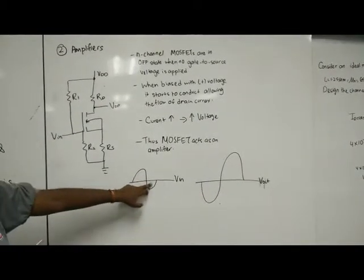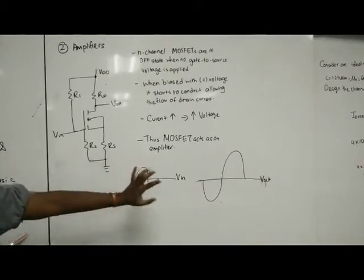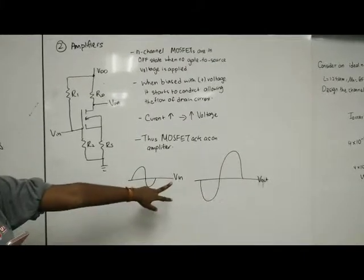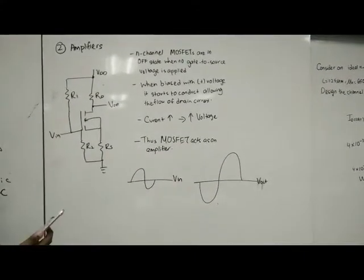MOSFET can act as an amplifier because when current increases, voltage increases. This is an example of the amplitude. You can see the amplitude of the graph - when voltage in, the amplitude is smaller, and when voltage out, the amplitude is bigger. This is why MOSFET can act as an amplifier.